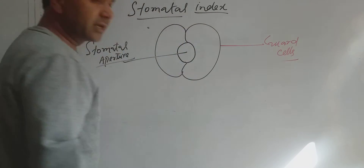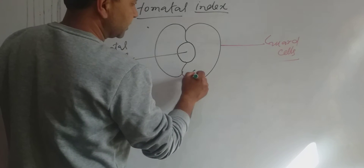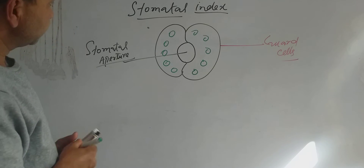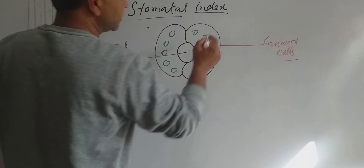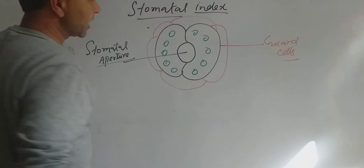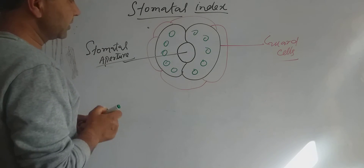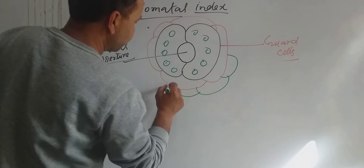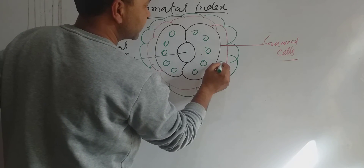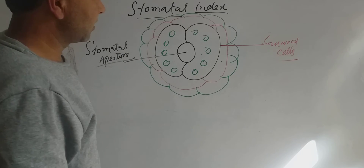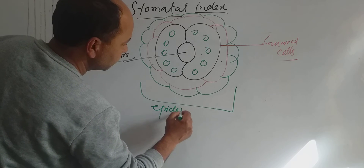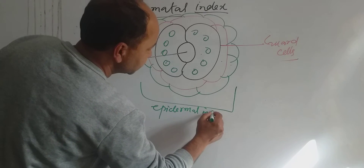Guard cells are surrounded by special types of epidermal cells known as subsidiary cells. These subsidiary cells in turn are surrounded by other epidermal cells. All these cells — that is the guard cells, the subsidiary cells, and the other cells of the epidermis — this whole structure is epidermal in nature, meaning it is present in the epidermis.